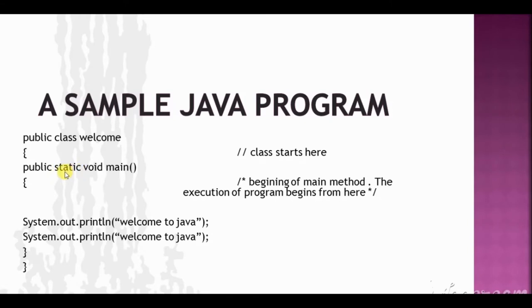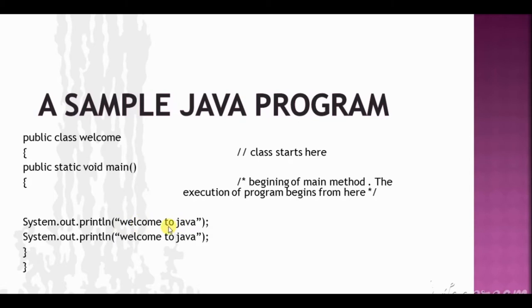'static' is a keyword which shows that this function remains the same for all instances of this class. 'void' is the return type of the main function, and the main function is the main method from where execution of the program begins. Next we have 'System.out.println'. Since Java is a case-sensitive language, 'S' is capital. Whatever we write inside double quotes is printed as-is in the terminal window.